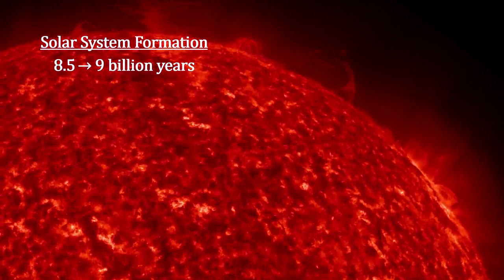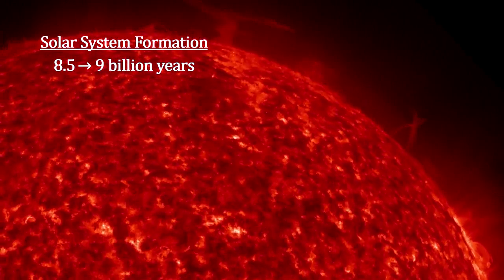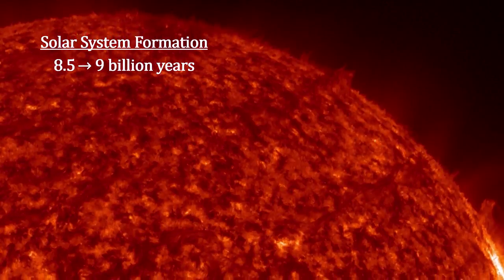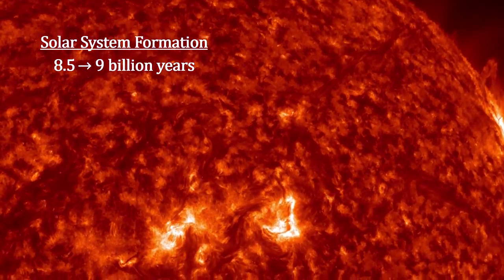Our sun is a late generation star, incorporating the debris from many generations of earlier stars. It and its solar system formed roughly eight and a half to nine billion years after the Big Bang.